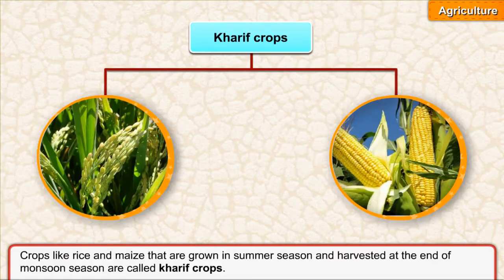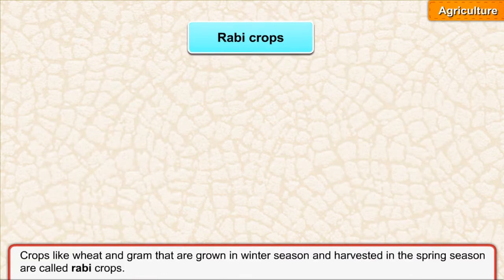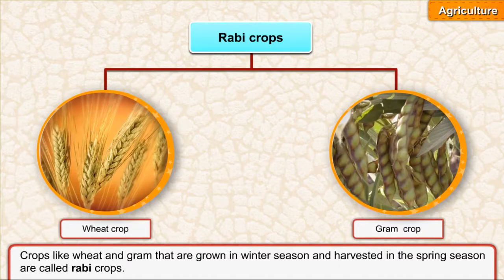Crops like rice and maize that are grown in summer season and harvested at the end of monsoon season are called kharif crops. Crops like wheat and gram that are grown in winter season and harvested in the spring season are called rabi crops.